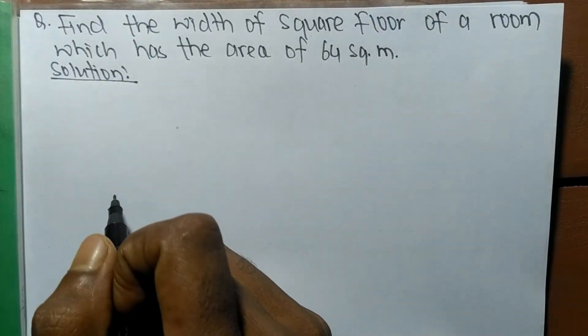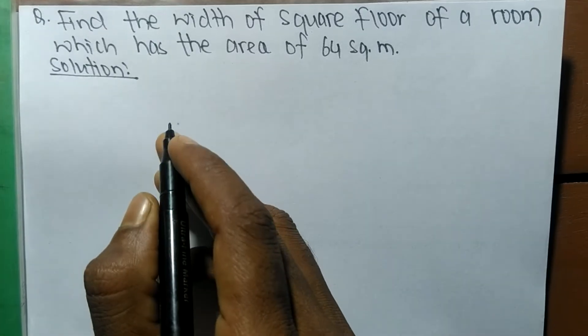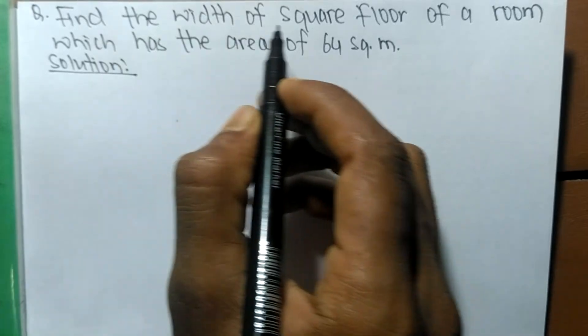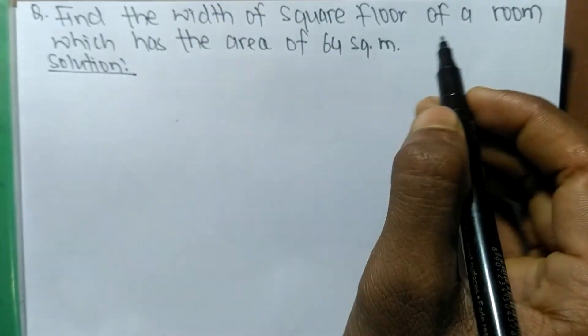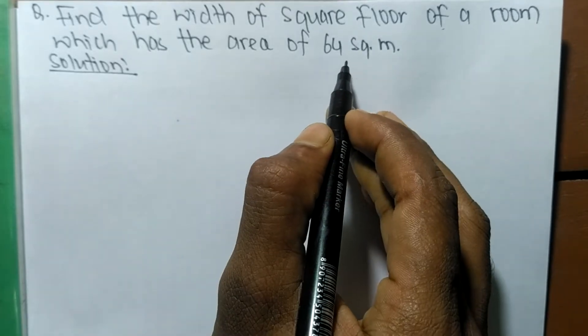So today in this video we are going to solve a mathematical word problem. The question is: find the width of a square floor of a room which has the area of 64 square meter.